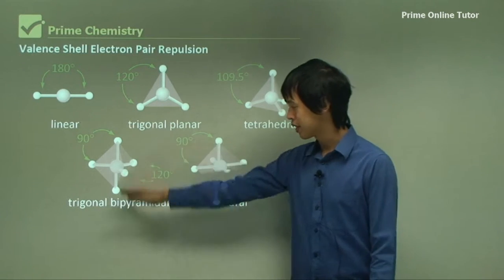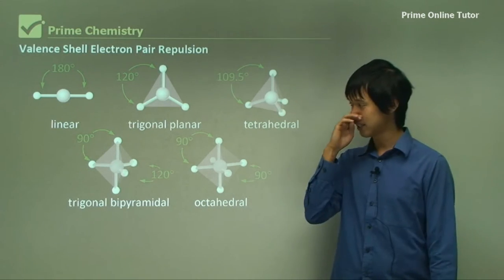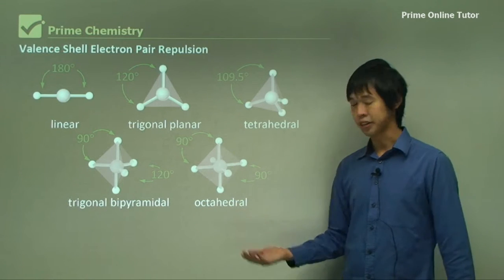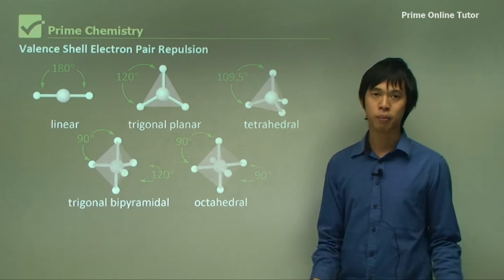So these ones are a little bit more esoteric. We see less of these in everyday life, but they still exist. So the trigonal bipyramidal and the octahedral are both shapes that we see, but are not so common in everyday life.